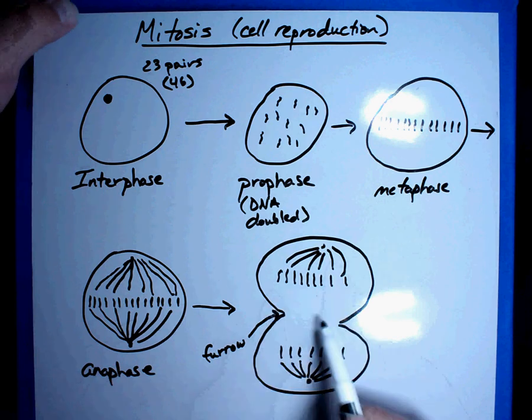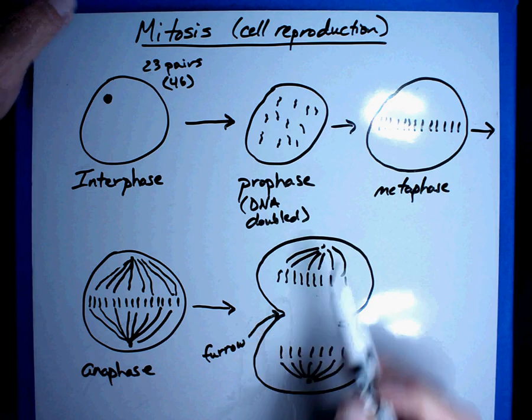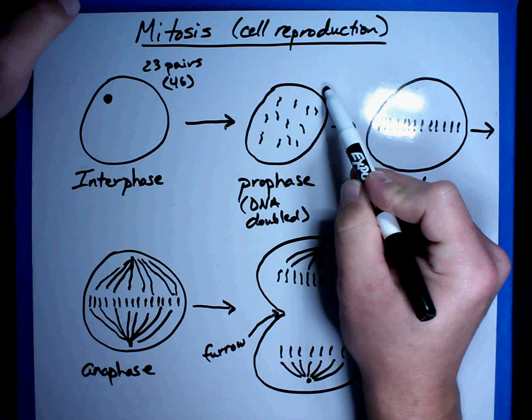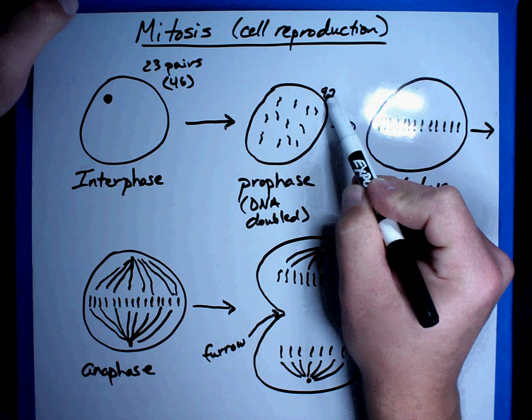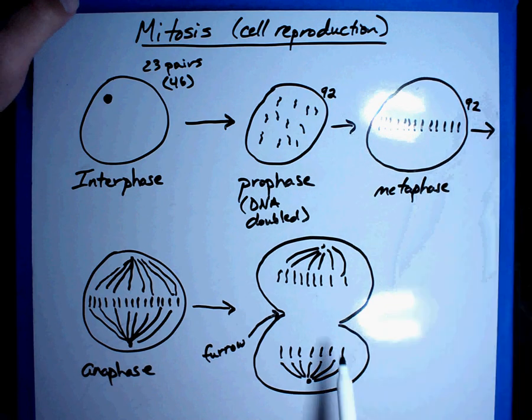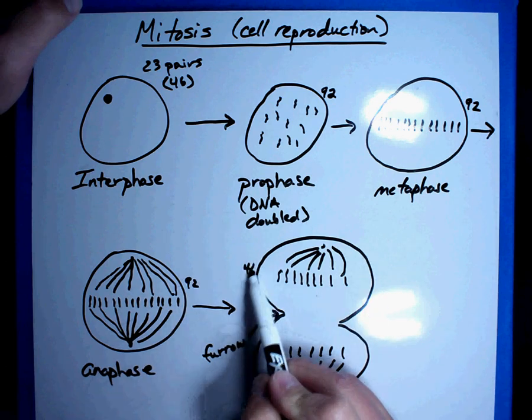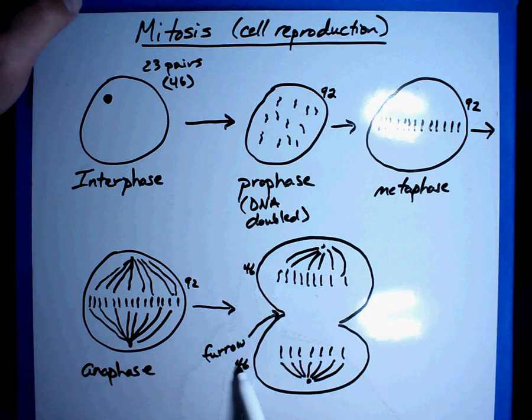Now, I'm going to go back just a minute so we understand, we've doubled our DNA, so we have 92 chromosomes. We're going to have 92 chromosomes here as well and we have 92 chromosomes here. But now what's happened is we have 46 chromosomes in this half and 46 chromosomes, they look just like the original.